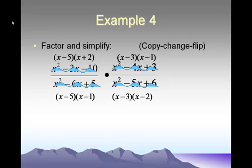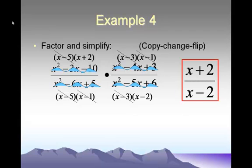Now look for things that can cancel — top to bottom or diagonally. The (x minus 5)s cancel, the (x minus 1)s cancel, and the (x minus 3)s cancel. Leftovers: (x + 2) on top and (x minus 2) on bottom. This is our final answer. We cannot cancel the x's or the 2s — both top and bottom have marriages and we cannot break into those marriages.